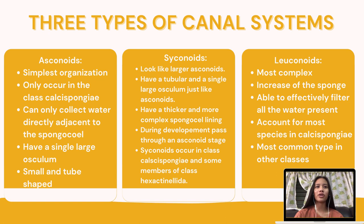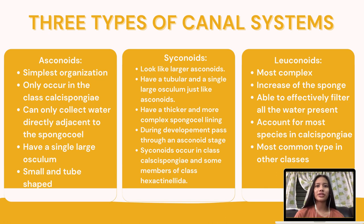The second type are syconoids. Syconoids look somewhat like larger asconoids. They have a tubular body and a single large osculum, just like asconoids. Unlike asconoids, though, syconoids have a thicker and more complex sponge cell lining. This lining is folded outward, increasing the surface area of the wall, which also increases the surface area covered by choanocytes. During development, syconoids pass through an asconoid stage, providing evidence that these sponges were derived from an ancestor with an asconoid body plan. Syconoids occur in class Calcispongiae and some members of class Hexactinellida.